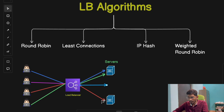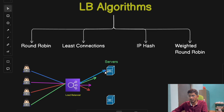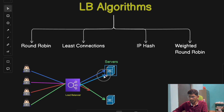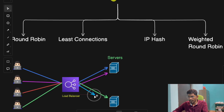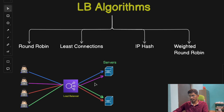For example, with two servers and four requests: both servers are initially free, so the first request goes to server one. For the second request, server one already has one active connection, so the algorithm routes it to server two. The third request goes to server one again since both now have equal connections — one each — chosen randomly. For the fourth request, server one has two active connections and server two has one, so the algorithm routes the request to server two. That is how the least connections algorithm works.